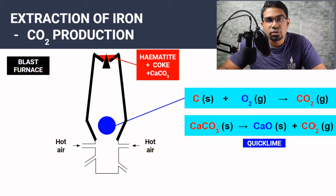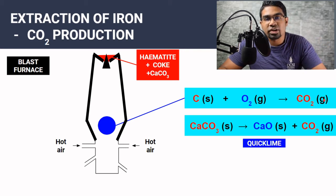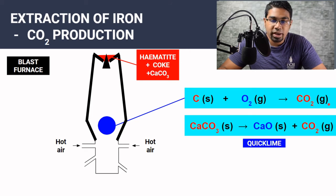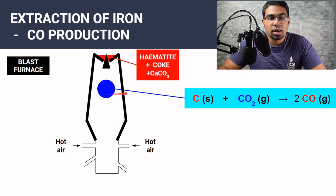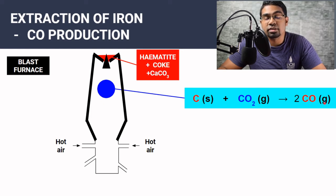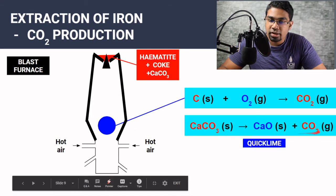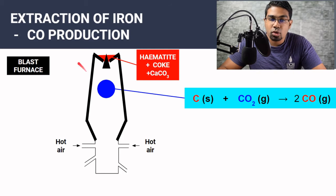However, carbon dioxide has little use here because it cannot be oxidized further, meaning it cannot act as a reducing agent. Remember, the goal is to reduce iron(III) oxide to iron. Higher up in the cooler region, carbon reacts with carbon dioxide to form carbon monoxide. Carbon monoxide can act as a reducing agent because it can be oxidized to carbon dioxide.